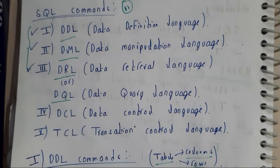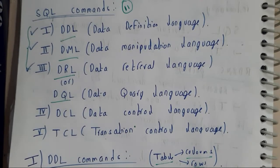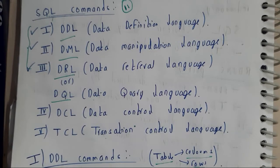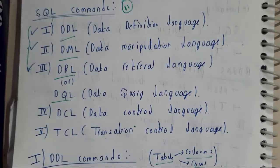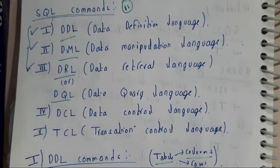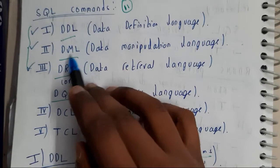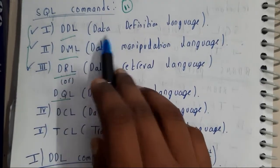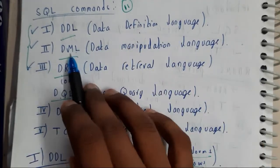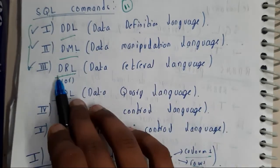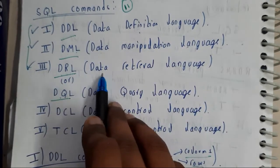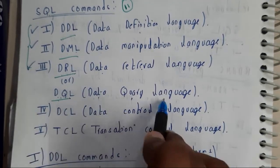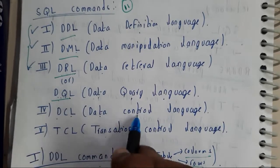Hello guys, we are back with our next tutorial. In this tutorial, let us go through the different commands of SQL. There are totally five different languages, or commands, you can call them. Those are DDL, DML, DRL, and DQL. DDL is nothing but Data Definition Language, DML is nothing but Data Manipulation Language, DRL is nothing but Data Retrieval Language, and DQL is nothing but Data Query Language.